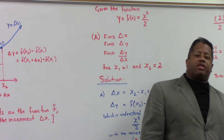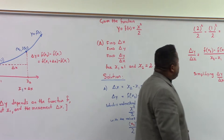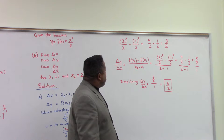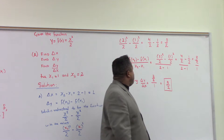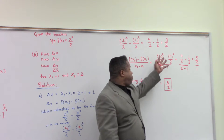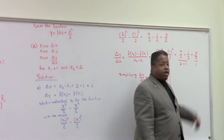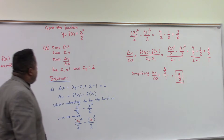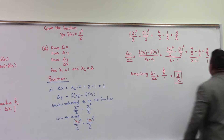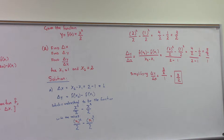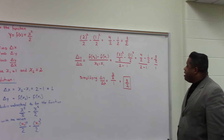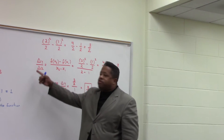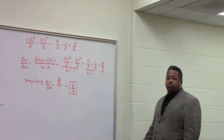Let's calculate delta y over delta x. We take f of x₂ minus f of x₁ over x₂ minus x₁, plug in the values, and get 3 halves divided by 2 minus 1, which is 3 halves divided by 1. So delta y over delta x equals 3 halves, and this represents the rate of change.